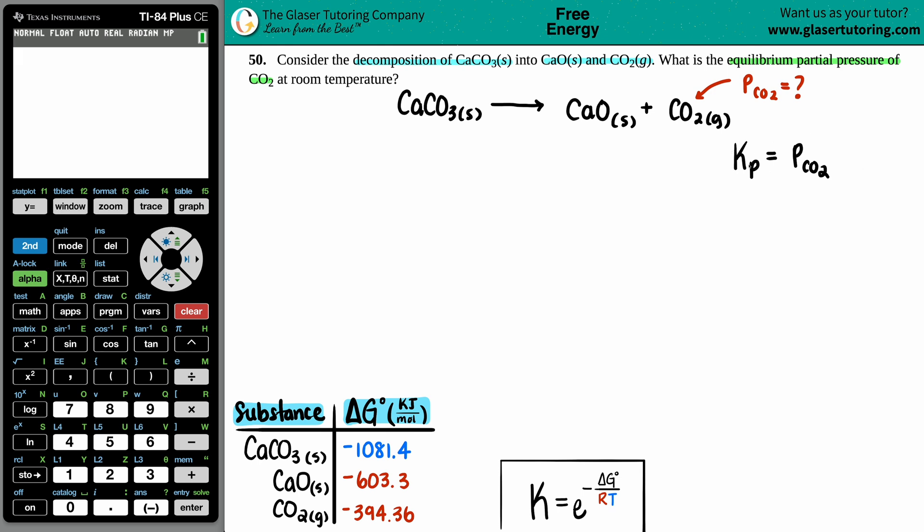And look here, the equilibrium constant Kp equals the partial pressure of CO2. So this is a piece of information that we need to know. This is like the link to find out what the answer to the question is. So basically we just have to find out what the Kp is.